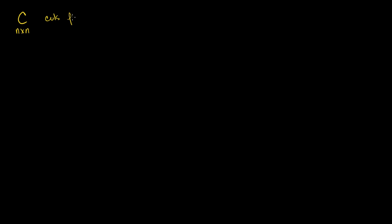In the last couple of videos, we've seen that if we have some matrix C that is n by n — a square matrix — and its columns form an orthonormal set, which just means that the columns have each been normalized so they each have length 1 if you view them as column vectors, and they're all mutually orthogonal to each other. If you dot a column with itself you get 1, and if you dot it with any of the other columns you get 0.